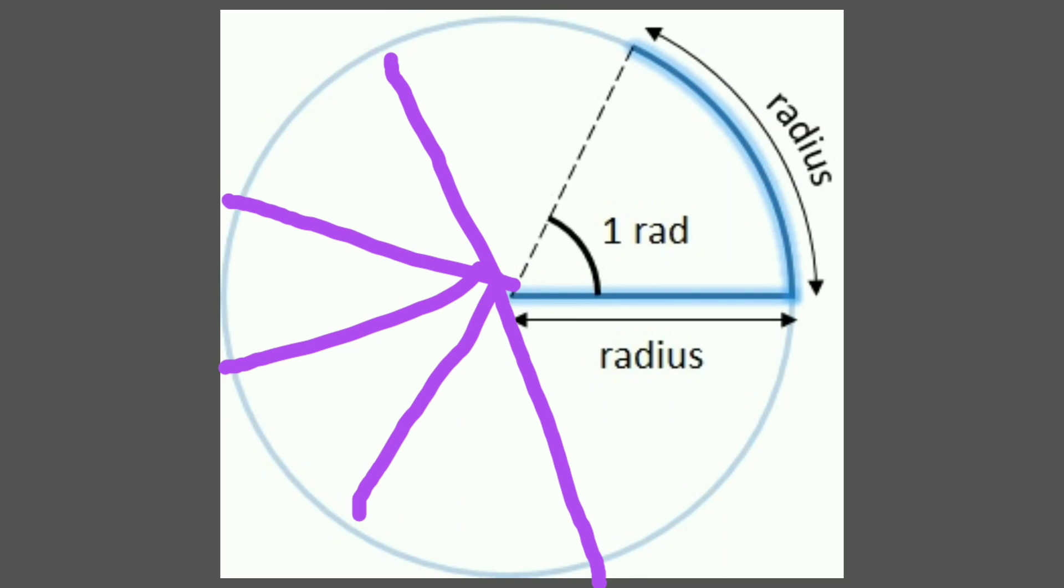Now the question is: how many radians are there in one circle? Since the circumference of a circle is 2πr, the angle subtended at the center is 2π radians.